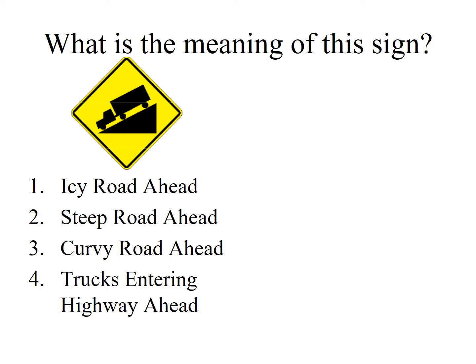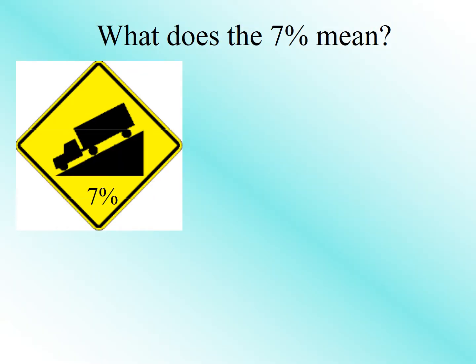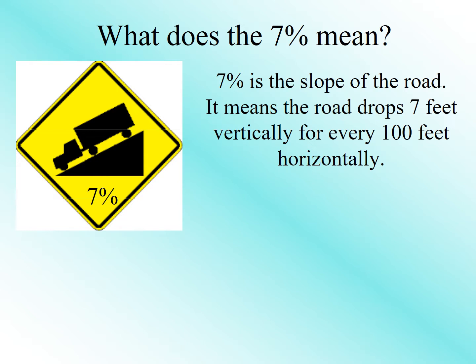What is the meaning of this sign? Steep road ahead. And the grade of this road is 7%. So what does that mean? It means that the road drops 7 feet vertically for every 100 feet horizontally.